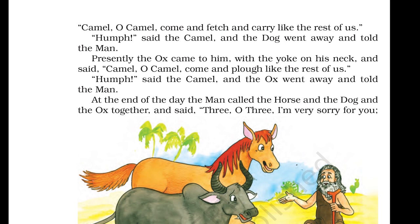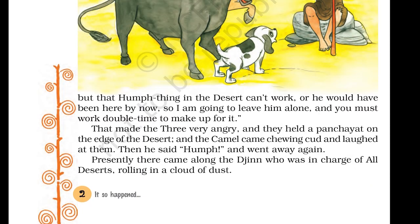At the end of the day, the man called the horse and the dog and the ox together and said, 'Three, oh three, I am very sorry for you, but that hump thing in the desert can't work, or he would have been here by now. So I am going to leave him alone and you must work double time to make up for it.' That made the three very angry and they held a panchayat on the edge of the desert, and the camel came chewing cud and laughed at them. Then he said 'Hump' and went away again.